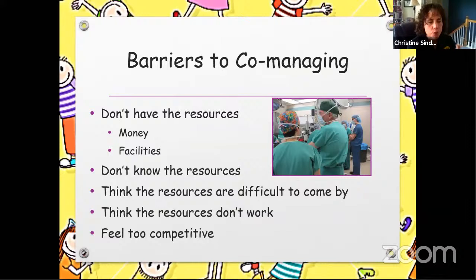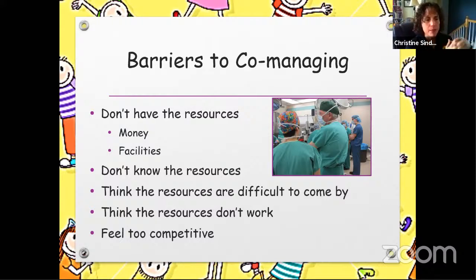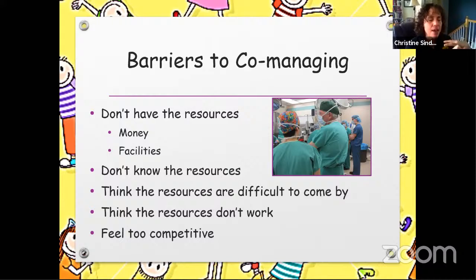There are some barriers to co-managing. In this picture we have cornea service, the glaucoma service, the retina service, and a pediatric surgical team there to correct the eye and help with the other abnormalities on this child as well. Often the barriers are we don't have the money or we don't have the facilities. I'm really hoping to show you some techniques today that can be very low cost and very portable — very manageable. You don't have to have high-tech resources to do it.